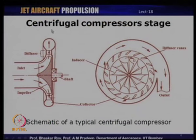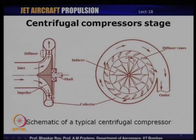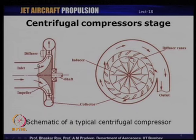A centrifugal compressor looks entirely different from an axial compressor. What is shown here is a typical schematic — a side view and a front view of the same compressor. In a centrifugal compressor, air comes in axially and leaves the compressor radially, unlike an axial compressor where both inlet and exit are axial. The incoming air is guided through a set of vanes known as the impeller — the rotor of a centrifugal compressor — which then diverts the flow into a collector or volute through diffuser vanes.